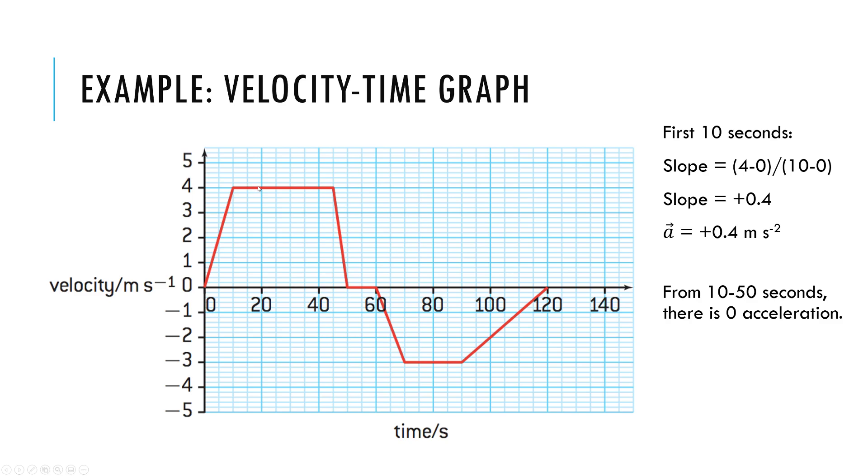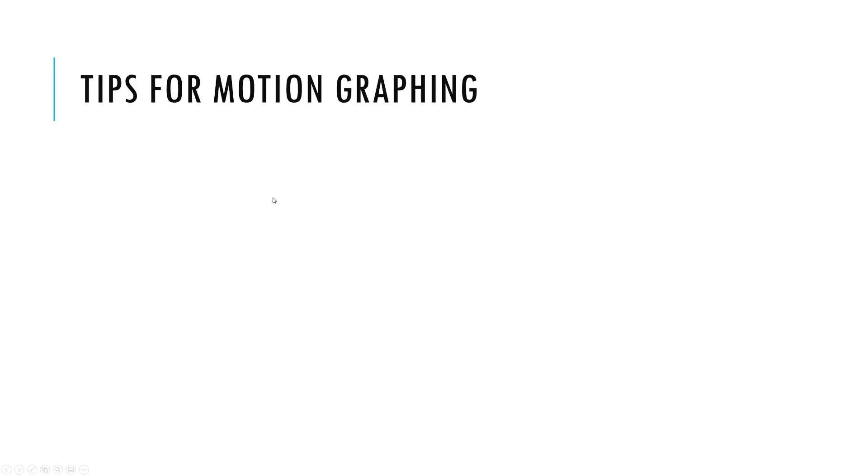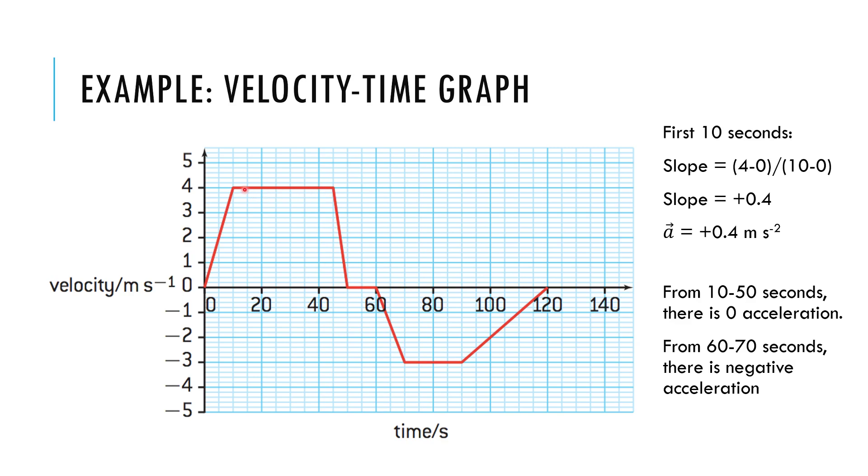I could say in this section, in this middle section, there is no acceleration, say from 60 to 70, there's negative acceleration because I have a negative slope. So any section, you can chunk like this, take the slope that tells you something on this graph that tells me about acceleration.